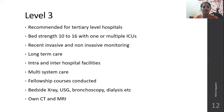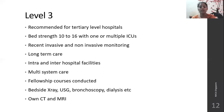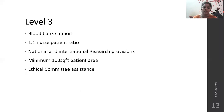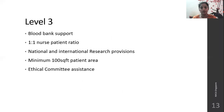Multi-system failure can be treated here. Fellowship courses are conducted and nurses are also certified. Bedside x-ray, ultrasonogram, bronchoscopy, and dialysis are provided. They will have their own CT and MRI department and blood bank within the hospital. One-to-one is the nurse-patient ratio in level 3. National and international research provisions are available. Minimum 100 square feet patient area should be given per patient, and an ethics committee is also present.